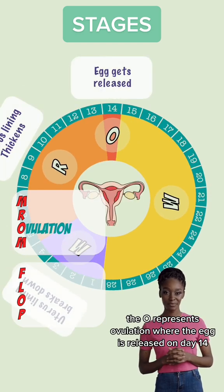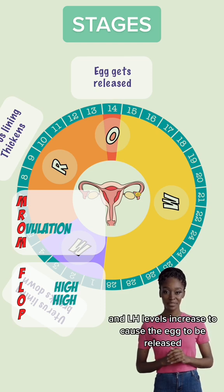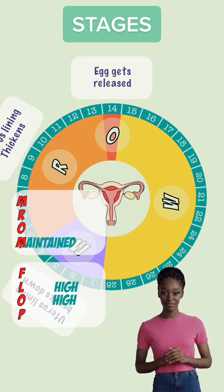The O represents ovulation, where the egg is released on day 14. Estrogen levels remain high, and LH levels increase to cause the egg to be released.